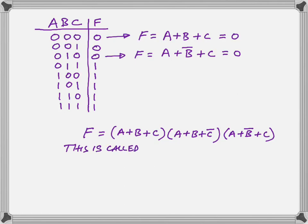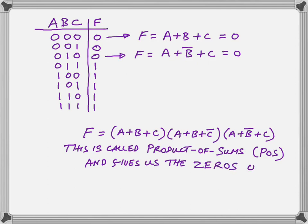So this is called a product of sums expression because we have a number of sum terms all multiplied together, and each of the sum terms represents a zero, and when we take them collectively, we say that the function gives us the zeros, or rather, each of the terms represents a zero in the function. And these terms, these sum terms, are referred to as maxterms with a capital M.